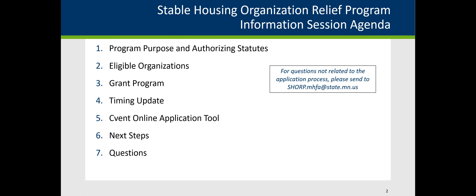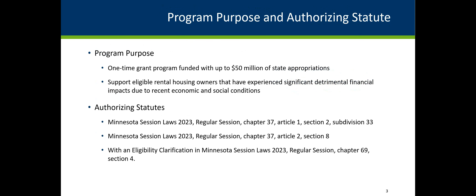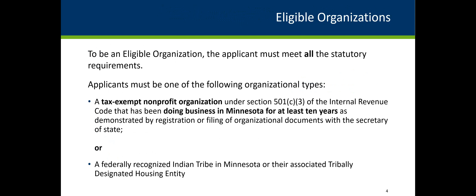If you're not familiar with the webpage, go to the Minnesota Housing website and use the search bar to type in SHORP — our Stable Housing Organization Relief Program — and it will take you to that page. Coming out of the 2023 legislative session, this program was approved as a one-time grant program with up to $50 million in state appropriations, with a purpose to support eligible rental housing owners that have experienced significant detrimental financial impacts due to recent economic and social conditions, helping preserve housing stability for households in Minnesota. Eligibility is particularly important for this program.